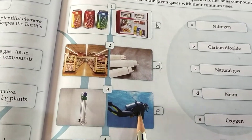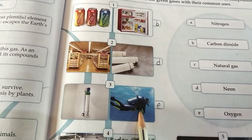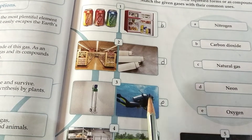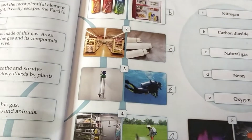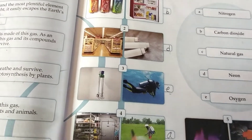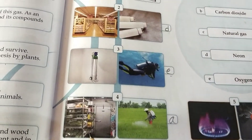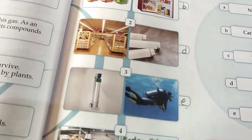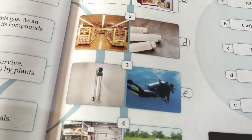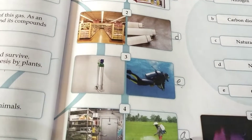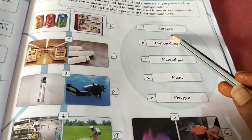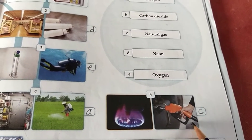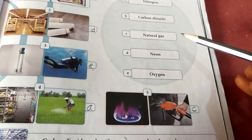Third one: oxygen — हम लोग पानी के अंदर भी जाते हैं, तो हम लोग oxygen cylinder लेके जाते हैं तब हम लोग breathe कर सकें. So this one is oxygen — E. Fourth one: cold storage और crops में जो दवाई डाली जाती है, इसमें कौन सा gas होता है? Nitrogen — A. And fire — petrol में कौन सी gas की जरूरत पड़ती है? Natural gas — ये सारे natural gas है.